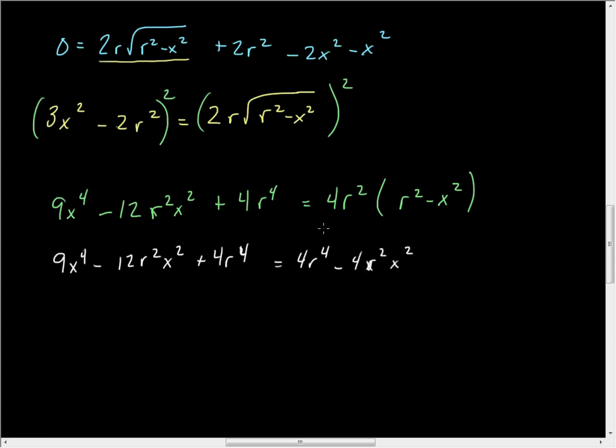Moving everything over to one side, these two cancel out. I get 9X squared minus 8R squared X squared. That's not X squared. That's not 9X squared. That's 9X to the fourth. Minus 8R squared X squared by moving that one over is equal to 0.